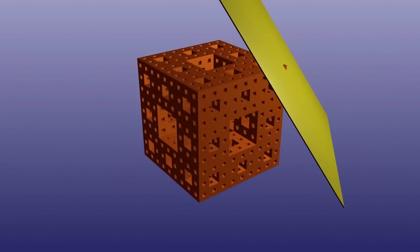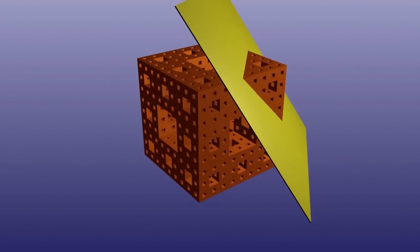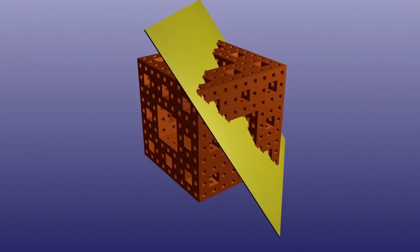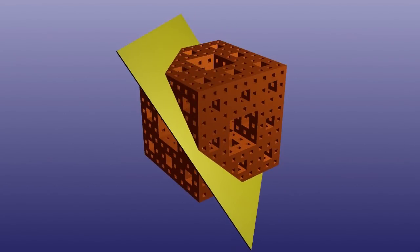But now, what if we slice it in half with the plane perpendicular to the long diagonal of the cube? Again, we can cut off different amounts, but the most interesting case is, what will the cross section be if we cut it exactly in half this way?